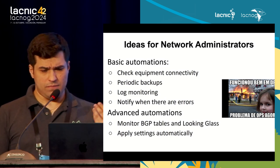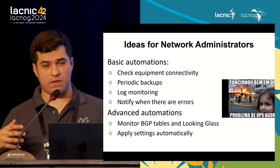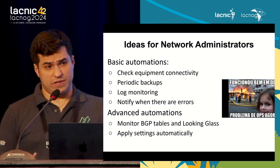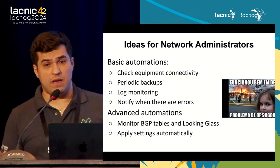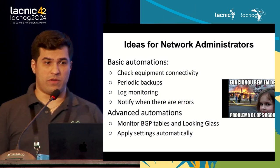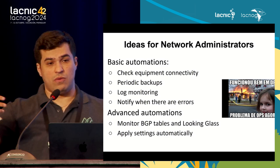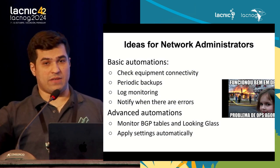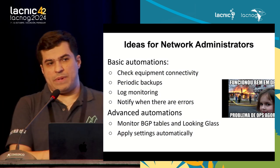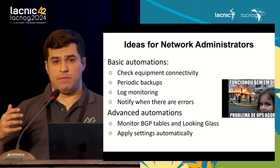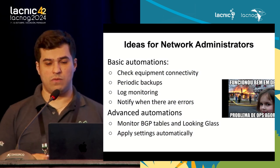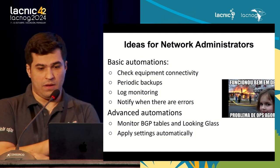You can also do log monitoring. If you have various records and want to monitor something specific for your network, you can write a script that searches for the information you want and notifies you when there is an error. You can also think about more advanced things, like BGP monitoring, Looking Glass tables — a tool that enters the Looking Glass and retrieves all routes, checks if a route changed, if someone hijacked your prefix, made a path change, or a route leak. You can make a script to automate searches in Looking Glass and provide all the information if a problem arises.